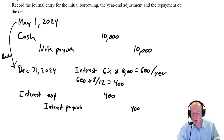That completes our accrued expense example. The key point is that the adjustment on December 31st is necessary because we need to tell shareholders about the $400 in interest liabilities building up, even though no payment is due yet. Without it, we wouldn't be telling the full truth. This is what this chapter is all about.